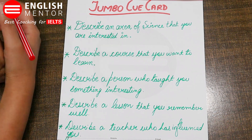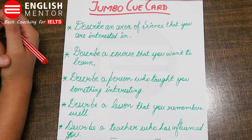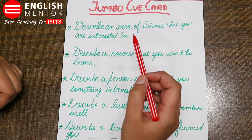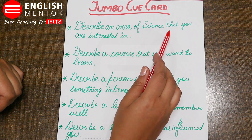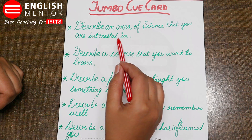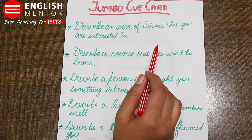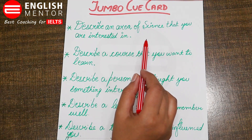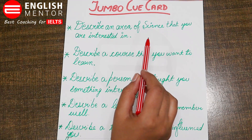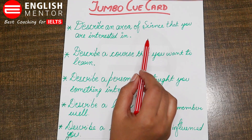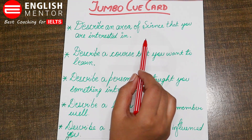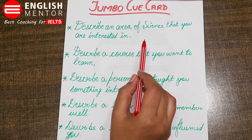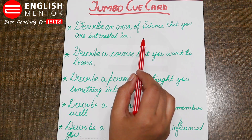Hello students, today through this video I would like to discuss the Jumbo QCard. The first QCard is: describe an area of science that you are interested in. Any branch of science, for example physics, chemistry, botany, biology, geology — you are interested in any specific branch.